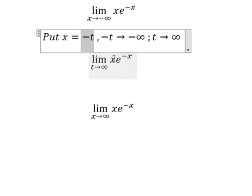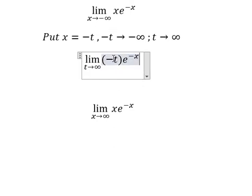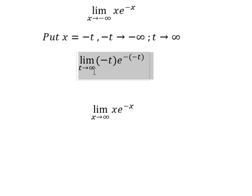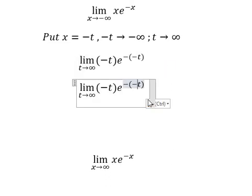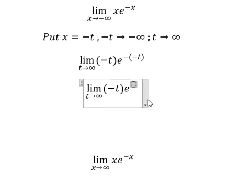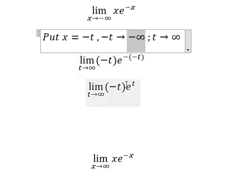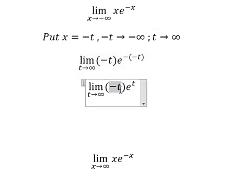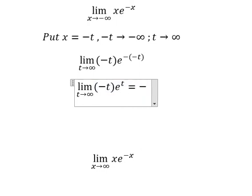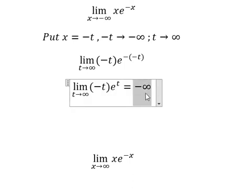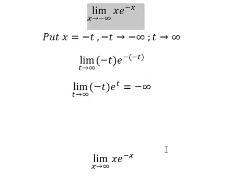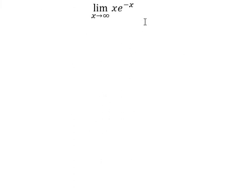We change x by negative t. Negative times negative gives positive. So when t approaches positive infinity, this term goes to positive infinity, and negative t goes to negative infinity. Positive infinity plus negative infinity gives negative infinity — and that is the answer for question number one.